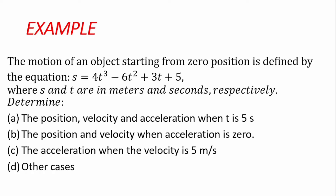The question states that the motion of an object starting from zero position is defined by the equation x = 4t³ − 6t² + 3t + 5, where x and t are in meters and seconds respectively. We need to determine: (1) the position, velocity, and acceleration when t = 5 seconds; (2) the position and velocity when acceleration is zero; and (3) the acceleration when velocity is 5 m/s.